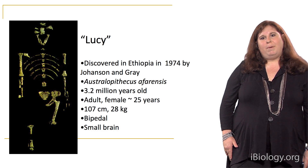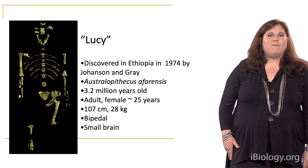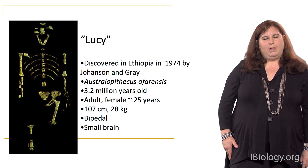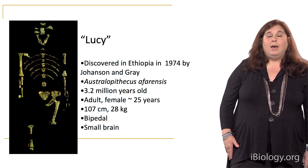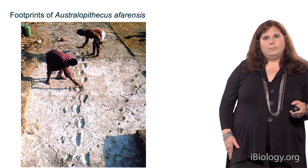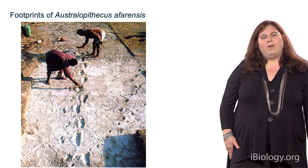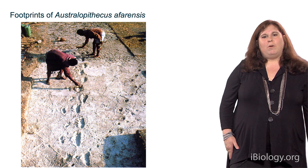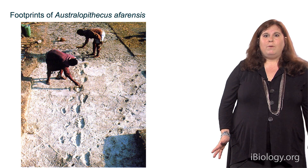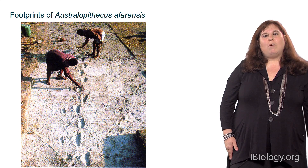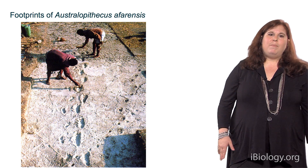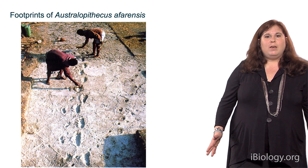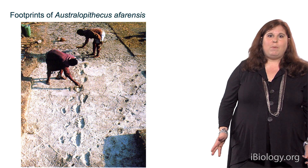Lucy lived about 3.2 million years ago. She was very small, only about 3 feet tall, had a very small brain, and she was bipedal — one of the key characteristics of the hominin lineage. Interestingly, fossilized footprints identified in Tanzania appear to show a mother from the species Australopithecus afarensis holding the hands of her child. They must have been walking in ash from recent volcanic activity, which hardened and preserved these footprints, clearly showing that they were bipedal.